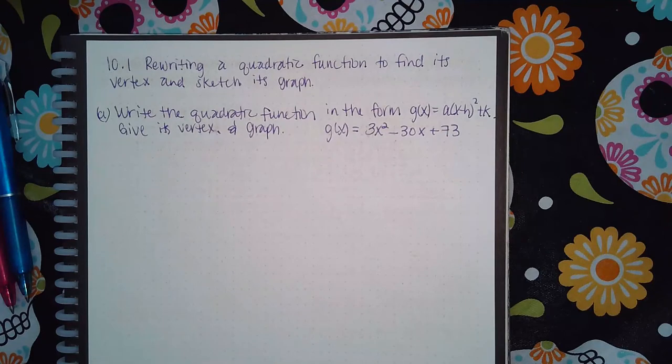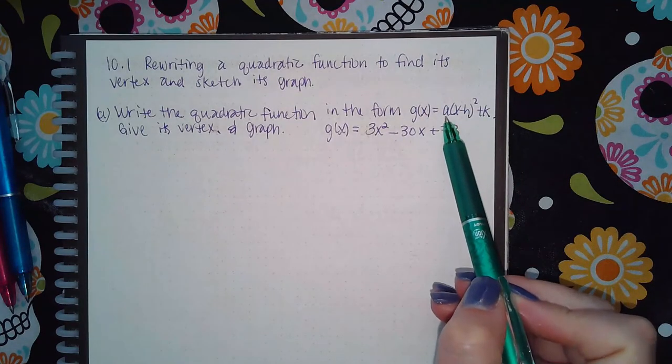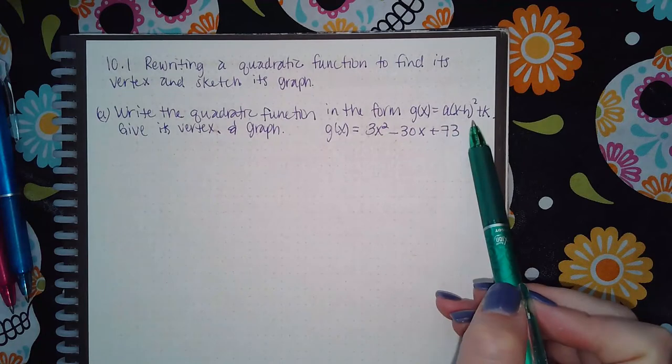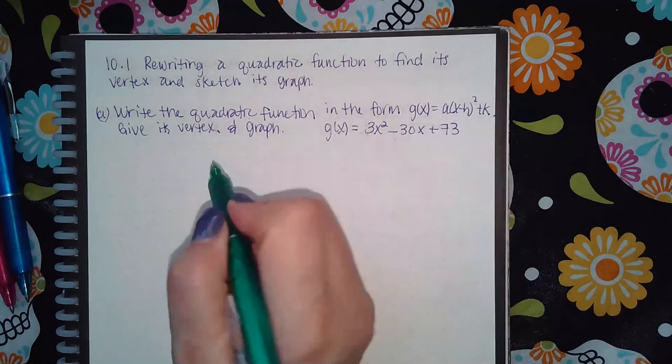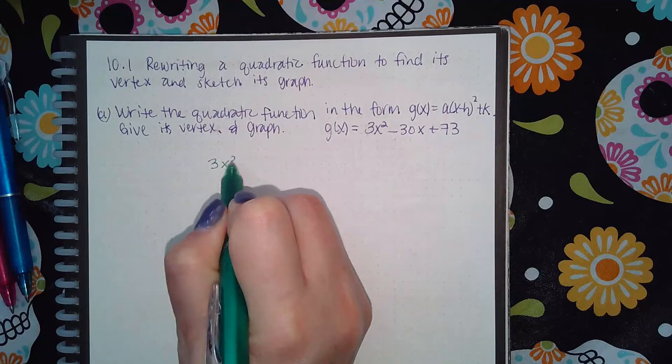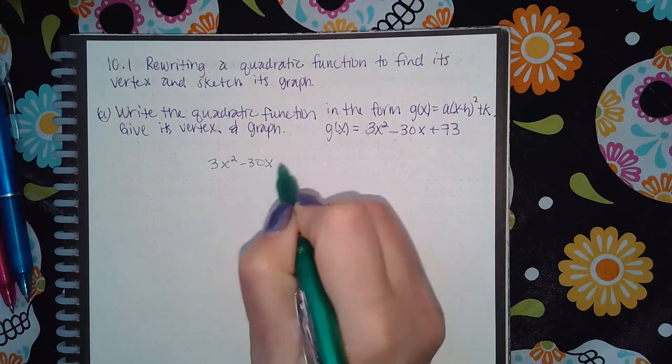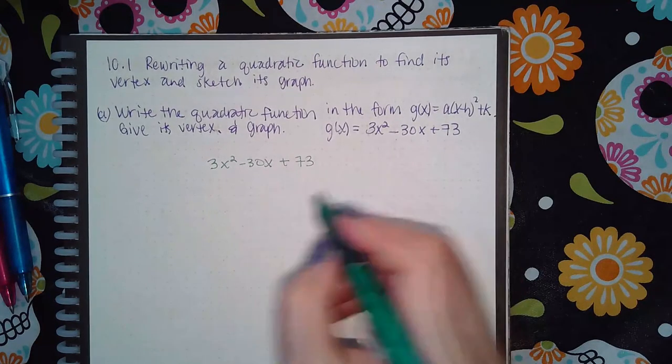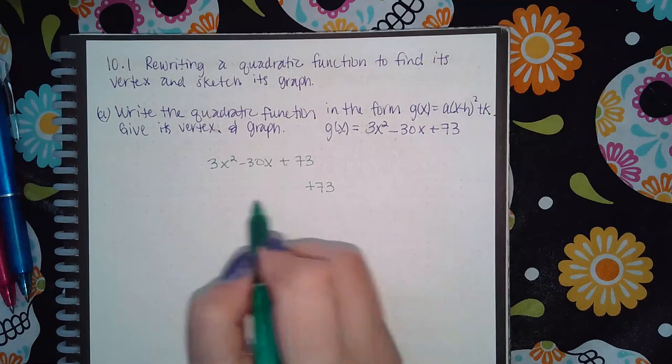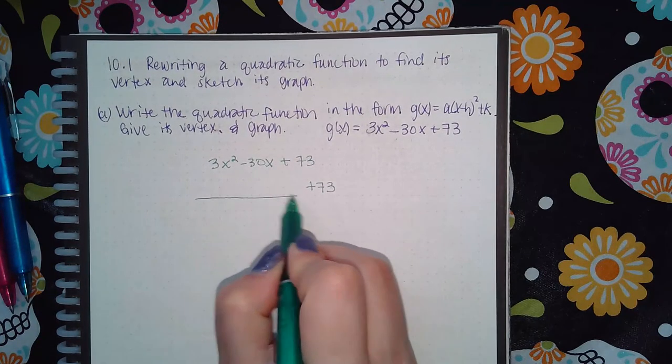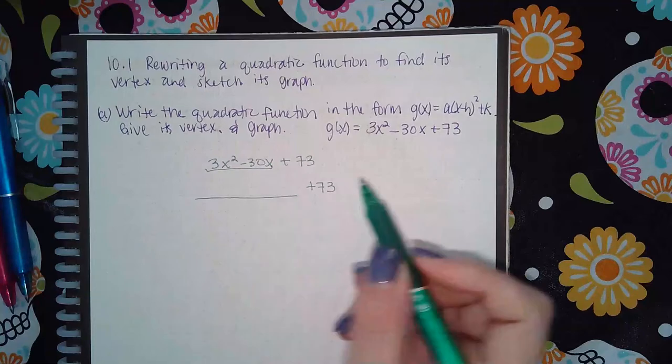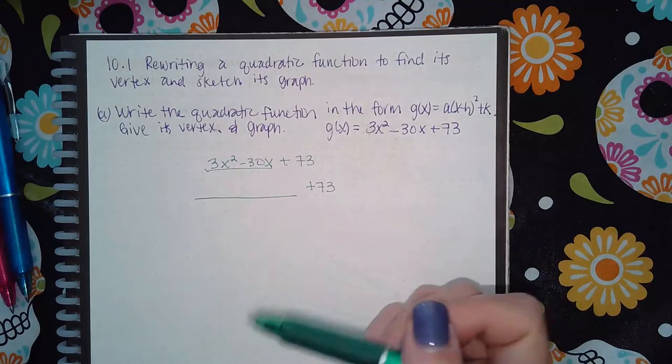Before I can complete the square, you need to factor out the a and then begin the completing the square process. I'm going to take this expression and kick the 73 off to the side for a little bit. I'm just going to work with these two terms here. I'm going to factor the a from those two terms.